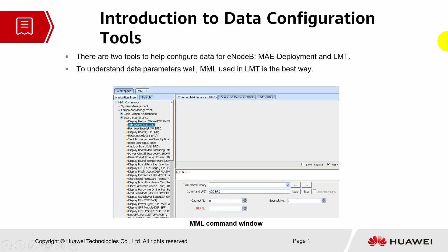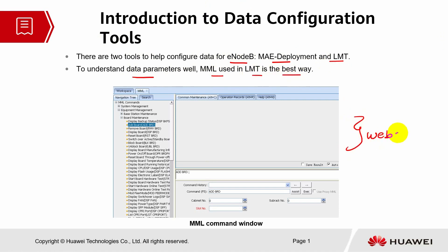Let's look into the introduction to data configuration tools. There are two tools to help configure data for eNodeB: MAE deployment and LMT. To understand the data parameters well, MML will be used, and LMT is the best way. This is basically the web LMT, and this is the MML command window.